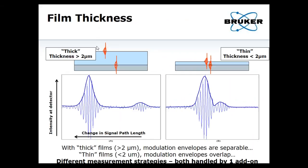We have to make a distinction between films that are optically thick and films that are optically thin. That break is the coherence length of the light source, about two microns. For a thick film, it's a fairly easy direct measurement. A camera pixel watching this would first see modulation from the top surface, then modulation from the bottom surface. Because that film is thicker than the coherence length, you can pretty easily segment these through. However, if you have a thin film, the two envelopes overlap and interfere, so we have to do an indirect model-based measurement using a fitting algorithm.